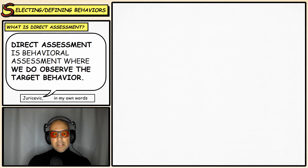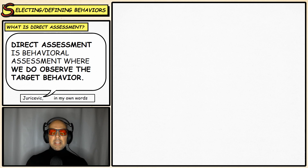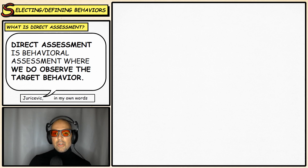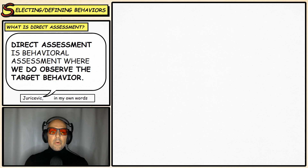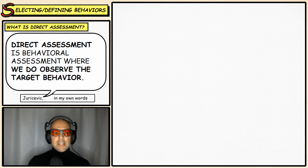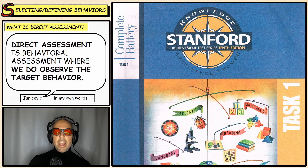Direct assessment, on the other hand, consists of techniques where the behavior is actually observed directly. The assessor gets to see and observe the behavior in its natural environment. There are various tools to assist in direct assessment, including standardized tests. It's important to remember that in direct assessment you need to observe the actual behavior you are assessing — so if you use a standardized test, make sure it actually requires performance of the behavior you're looking for.